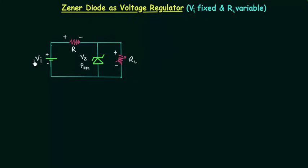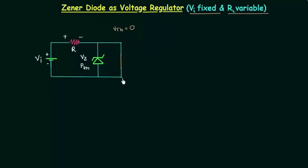In the last presentation we kept input voltage and load resistance fixed. In this lecture, input voltage is fixed but load resistance is variable. This is the symbol for varying load. When load resistance is too small, voltage across the Zener diode will be smaller than Vz and it will remain off. For example, when load resistance is equal to zero, the Zener diode will be short circuited and voltage across it is zero. So there are two things in this lecture.